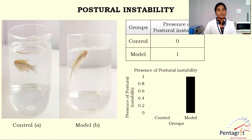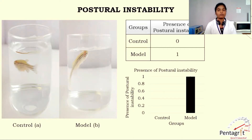Next is postural instability. Postural instability is one of the cardinal manifestations of Parkinson's disease due to the loss of postural reflexes. Although it is not common in the early stages, it becomes a clinical concern in the middle and later stages of Parkinson's disease. Models with Parkinson's disease have decreased stability during both static and dynamic motor tasks. This assay is performed to observe the presence or absence of postural instability. The fish is introduced into the experimental tank using a net, and the unstable posture is recorded on video. On the screen, the video represents the instability in body posture of the model, and the graph represents the presence of postural instability in the model and absence in the control.